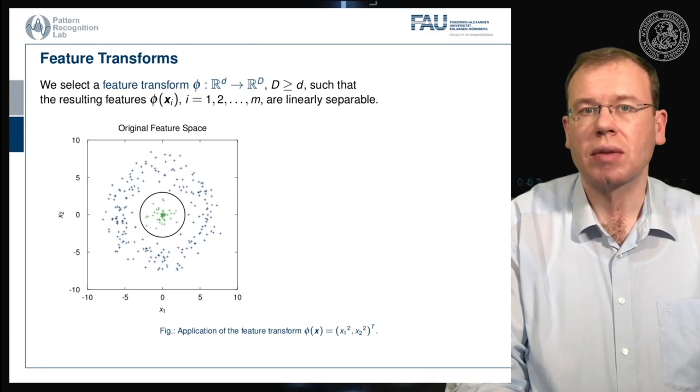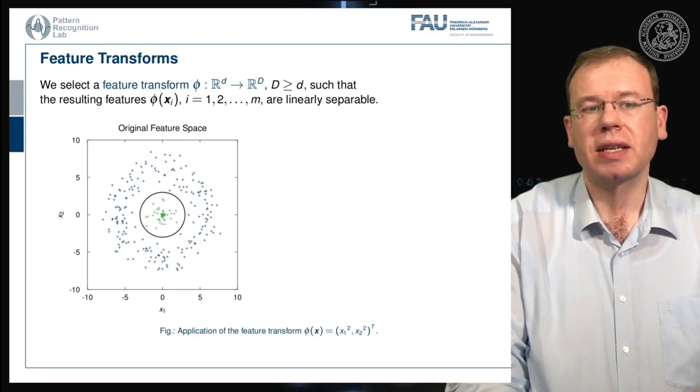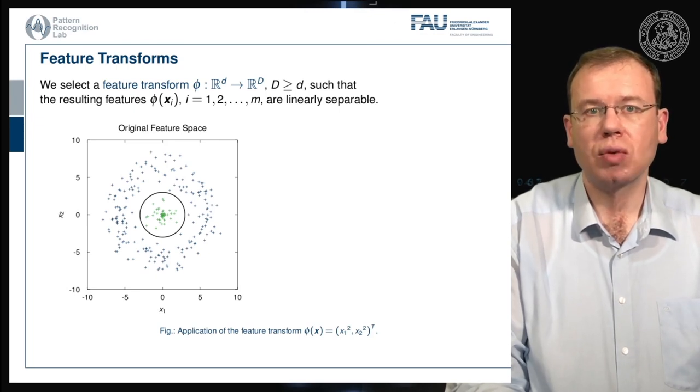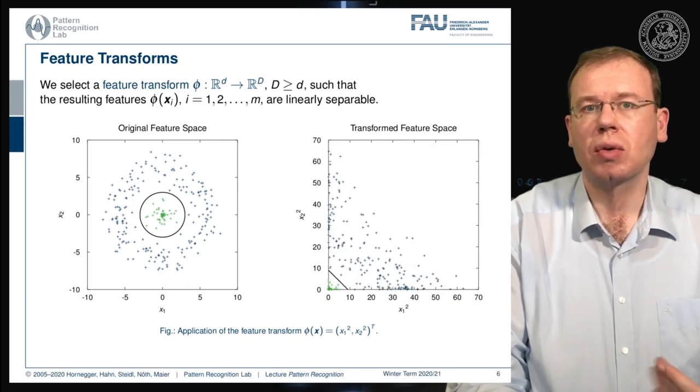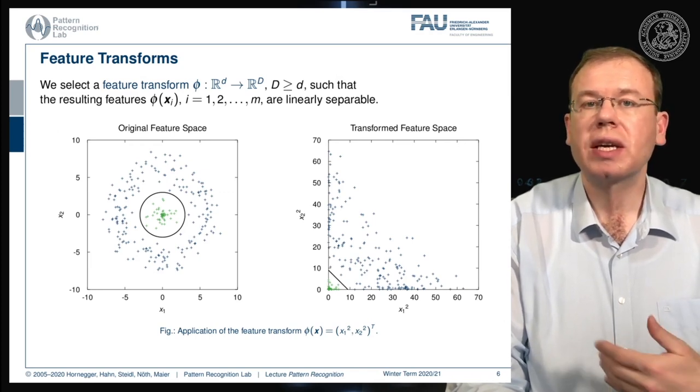It's very clear that this example cannot be solved with a linear decision boundary. But now I take the feature transform phi equals to x1 square and x2 square. This has exactly the same dimensionality and by mapping onto these squared dimensions we can now find a linear decision boundary.